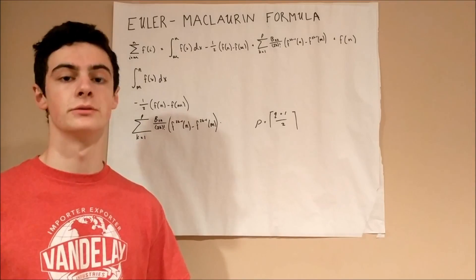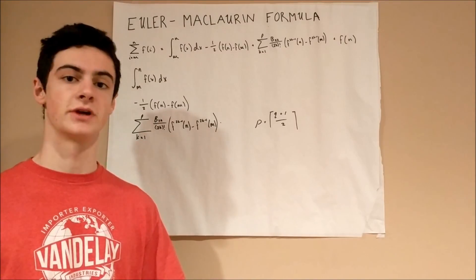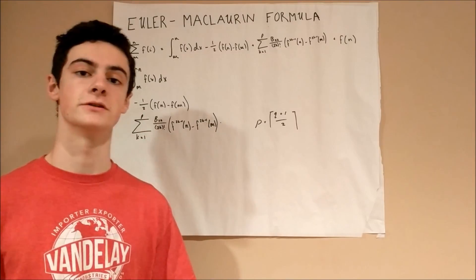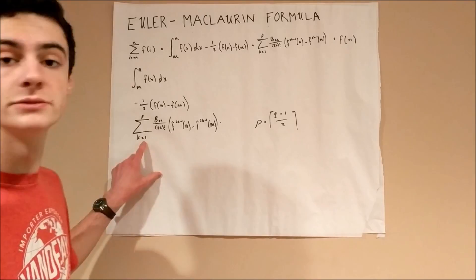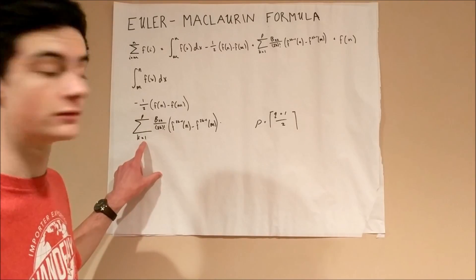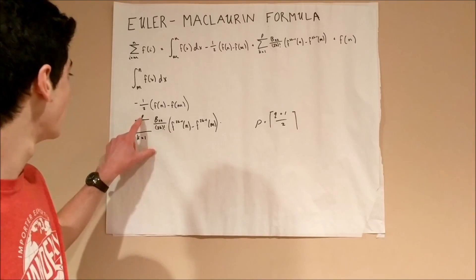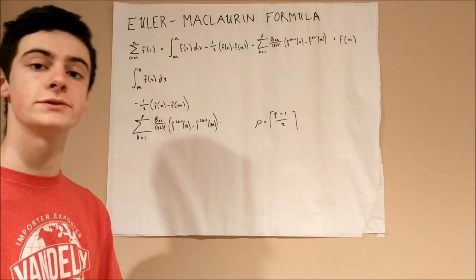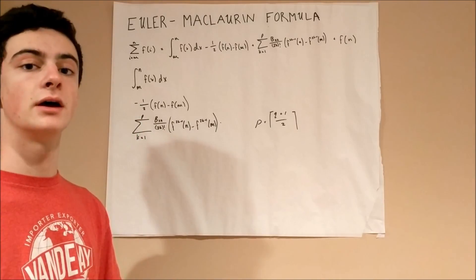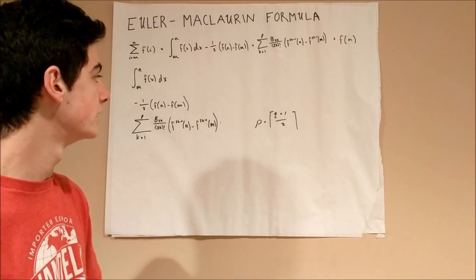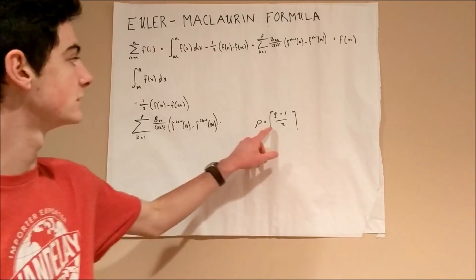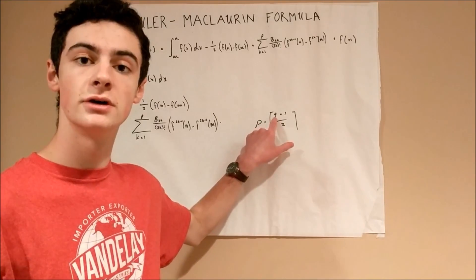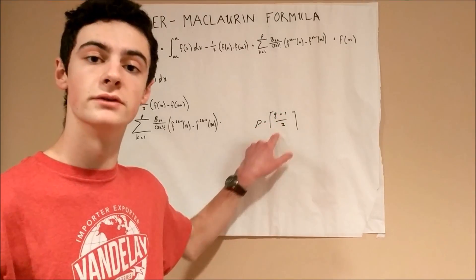This third component is the most complicated, and it involves a summation in terms of the variable k, going until p. So p is your upper limit, and it is defined as the ceiling function of q plus one over two.